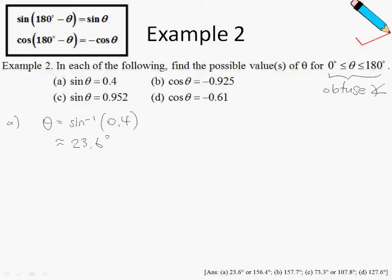Take note that for sine in the range 0 to 180 degrees, there will always be two answers. The first answer is whatever you get from the calculator. The other answer is 180 degrees minus that answer. As for why there are two answers, you will learn about the ASTC diagram in additional mathematics. So for part A, the answers are 23.6 degrees or 156.4 degrees.